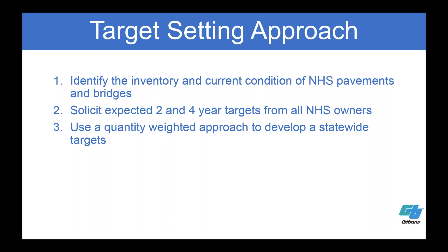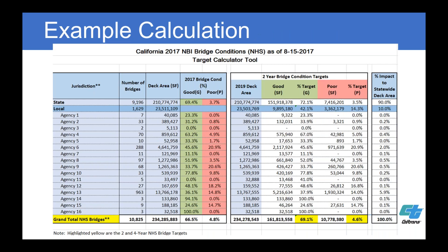We then used a quantity-weighted approach to develop statewide targets. Since Caltrans has 90% of the influence on bridges, our target carries 90% of the total weight for the state, and other agencies carry weight commensurate with their inventory. This required going to every MPO and asking for their input — we had frequent communication, developed Q&As, shared all bridge and pavement data so they could verify what we had. When we got all responses back, we put them into a worksheet to calculate our California two- and four-year numbers.